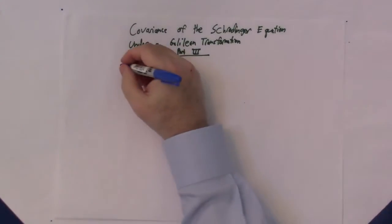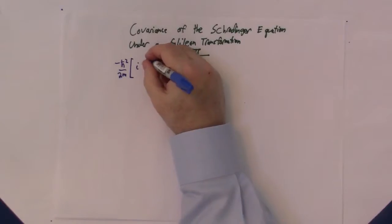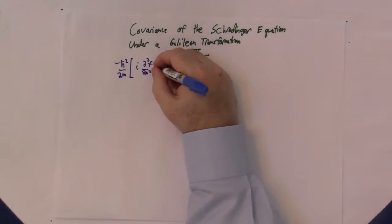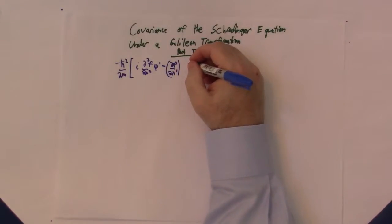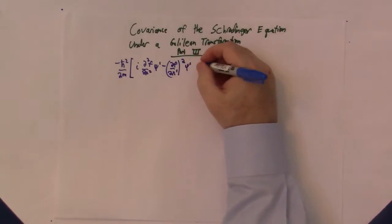To summarize, last time we established that we need to solve this equation in order for the Schrödinger equation to have the same form in the prime and unprimed reference frames. And this equation looks very complicated, but it actually isn't for two reasons.